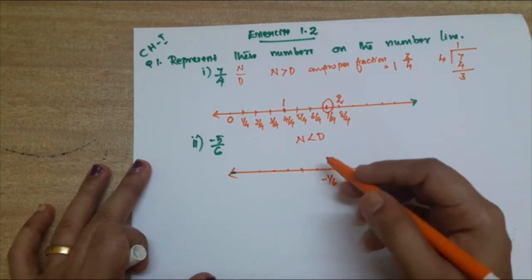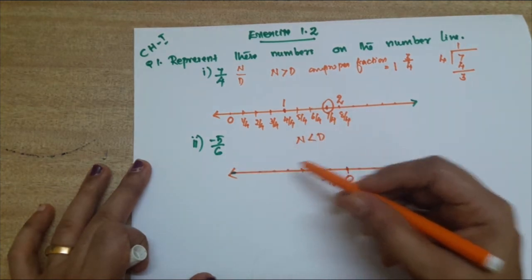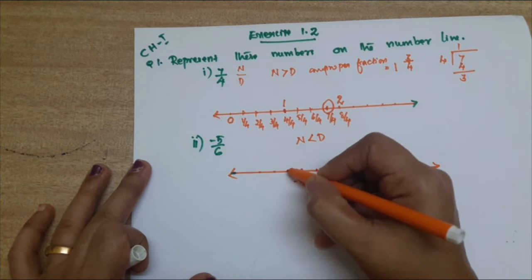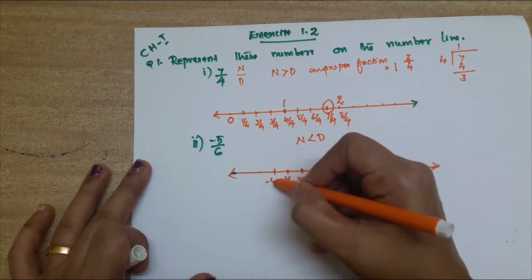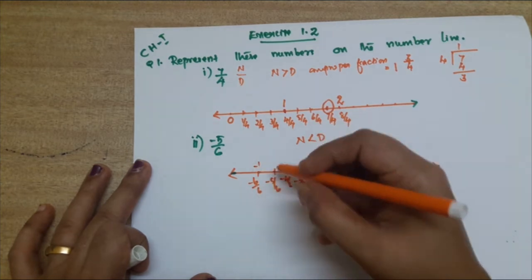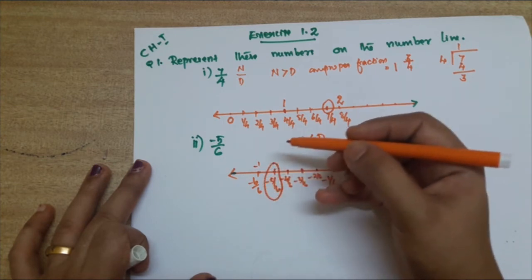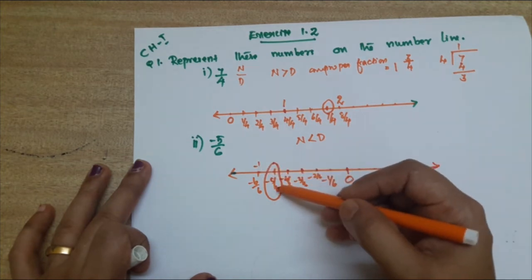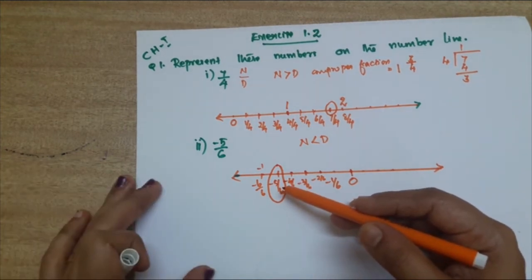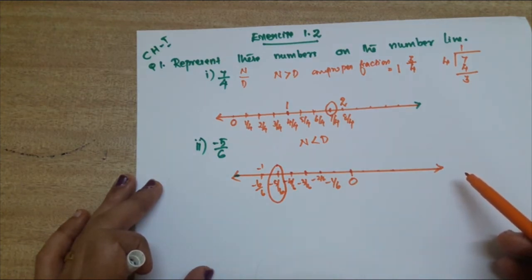We need 6 parts because the denominator is 6. So: minus 1 by 6, minus 2 by 6, minus 3 by 6, minus 4 by 6, minus 5 by 6, minus 6 by 6 — that means minus 1. Our question is minus 5 by 6, which is here. It is on the left side of 0 because it is negative; if it were positive it would go to the right side of 0.